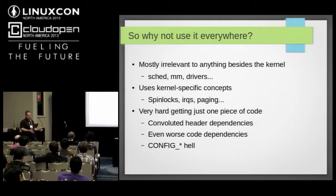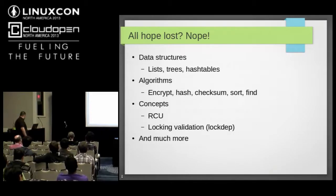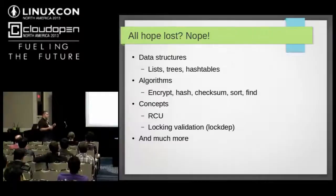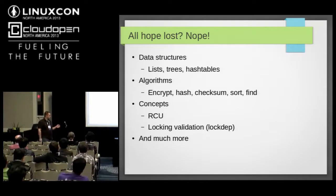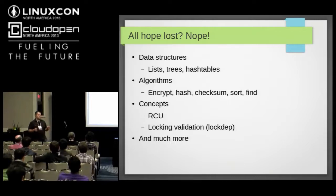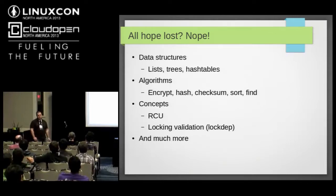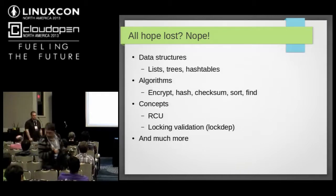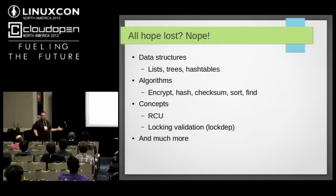After all that, you might say the kernel is useless — let's just leave it and rewrite our code. Not exactly. There are some small things we can get from the kernel and reuse. The kernel implements quite a lot of data structures: several lists, trees, and hash tables — not just one implementation but many. We know those implementations are good and tested because they're in the kernel. The kernel also has a bunch of algorithms — lots of encryption, hashing, checksumming — and we know those are also correct and tested.